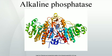ALPI — intestinal, molecular weight of 150 kDa. ALPL — tissue nonspecific (liver, bone, kidney). ALPP — placental, also known as the Regan isozyme.